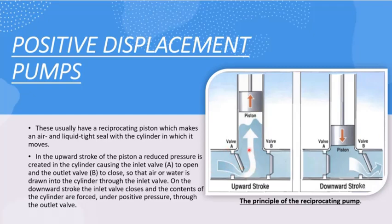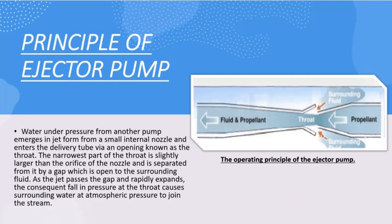After this, valve A automatically closes. Then, during its downward stroke, it opens NRV B and pushes the fluid from inside the cylinder to the outside. This is how a reciprocating pump, or a positive displacement pump, works.